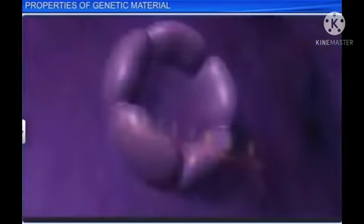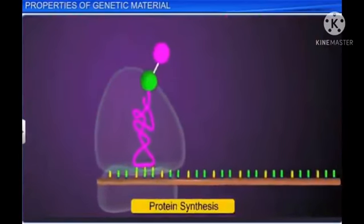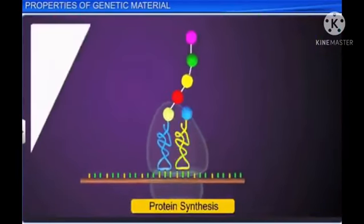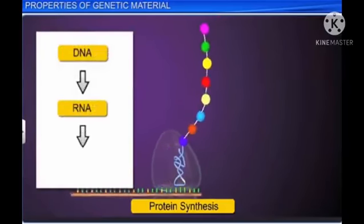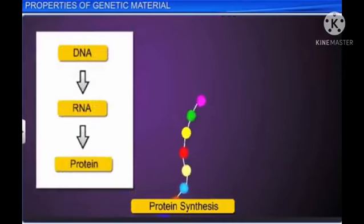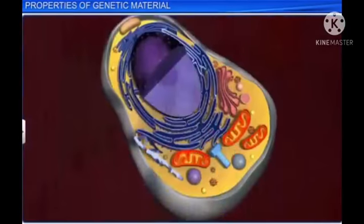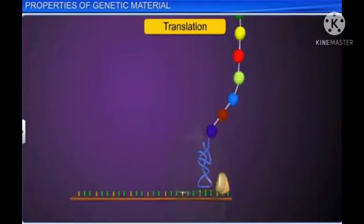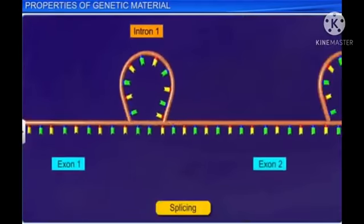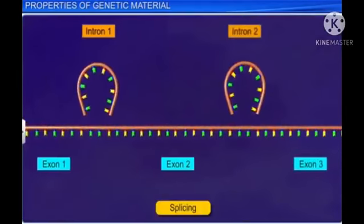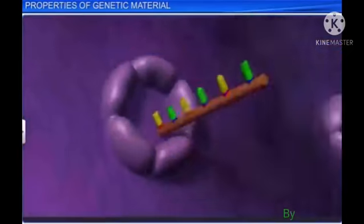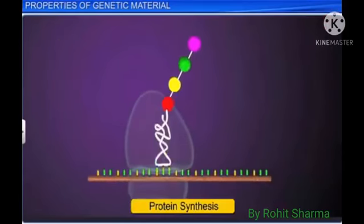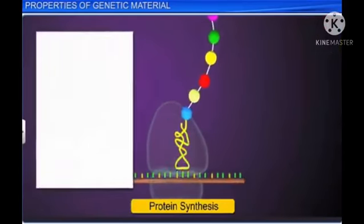Nonetheless, RNA can directly code for protein synthesis and thereby easily express the characters. In this regard, DNA is dependent on RNA, not only for protein synthesis but also several essential life processes such as translation and splicing, which are evolved around RNA. Therefore, even though DNA is the preferred genetic material due to its stability, it is RNA that is involved in the transmission of genetic information.